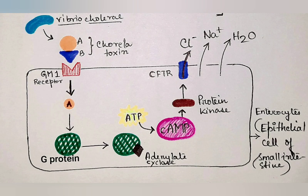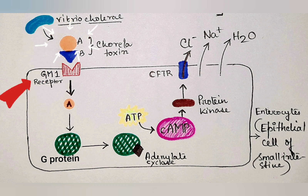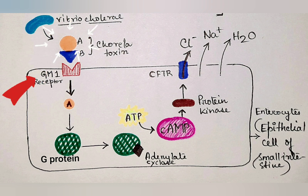Looking at the diagram, the beta subunit of cholera toxin binds to the receptor. After binding, endocytosis of the cholera toxin takes place, and it travels to the endoplasmic reticulum via retrograde transport — that is, from the Golgi to the endoplasmic reticulum.